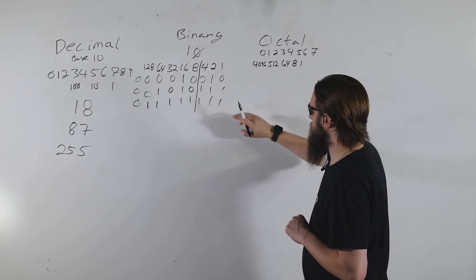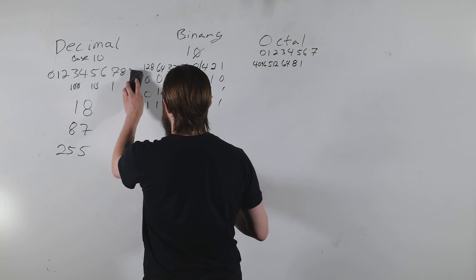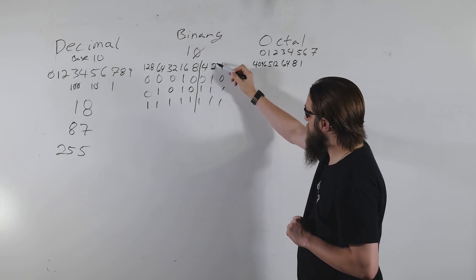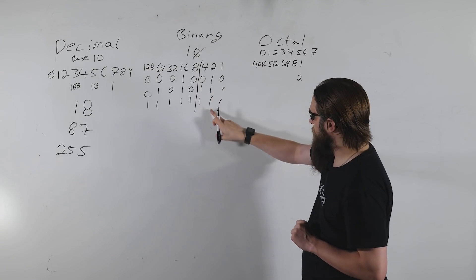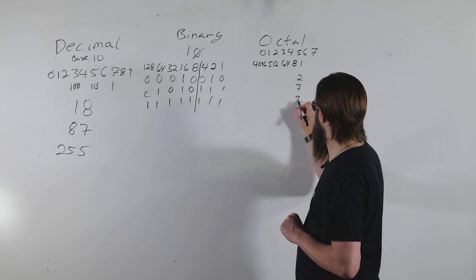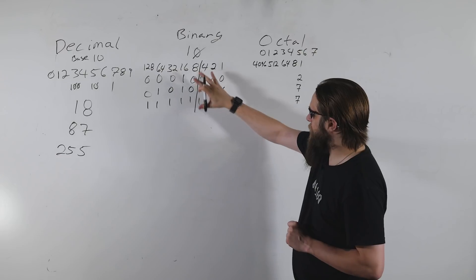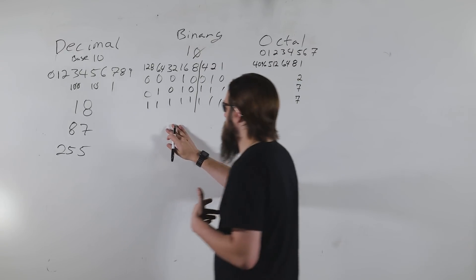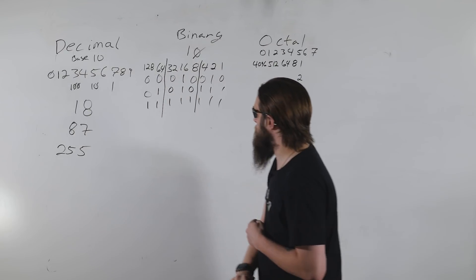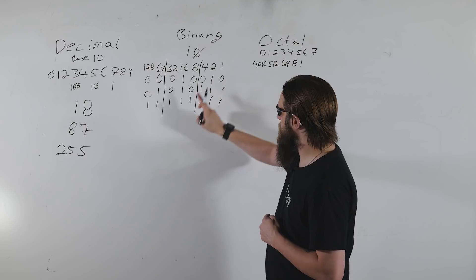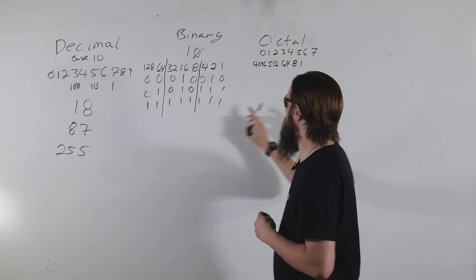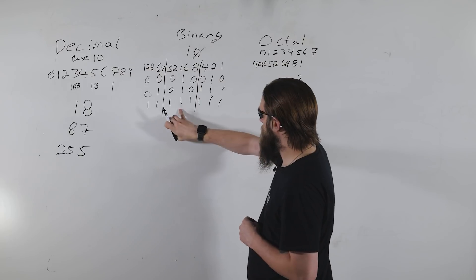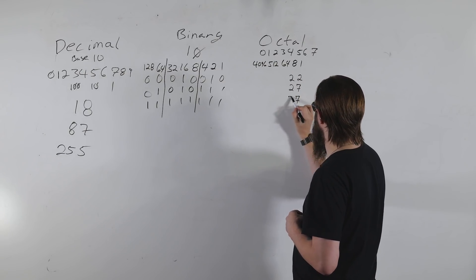We segment out the first three bits and translate them into octal. For 18 in binary, the first three bits give us 2; for 87 and 255 they give us 7. Then we move to the next three bits. Even though it's the eights column, we still number it zero through seven. That gives us 2, 2, and 7 for our three numbers.